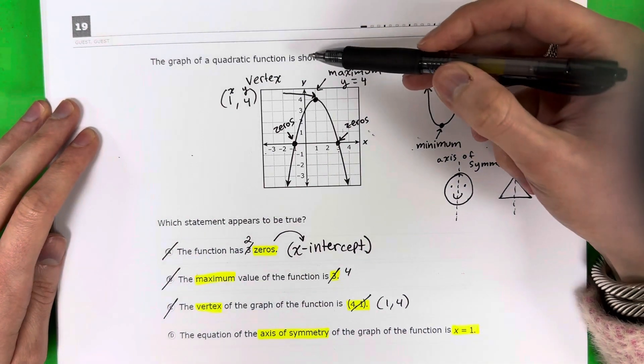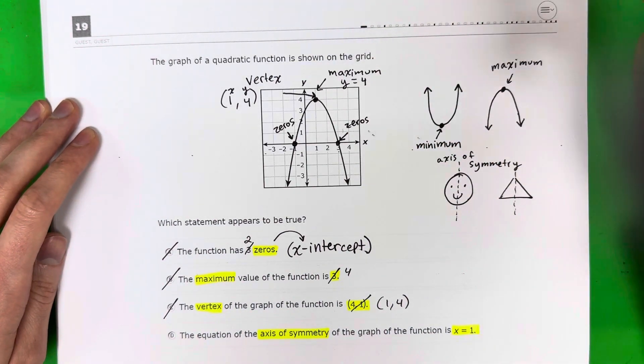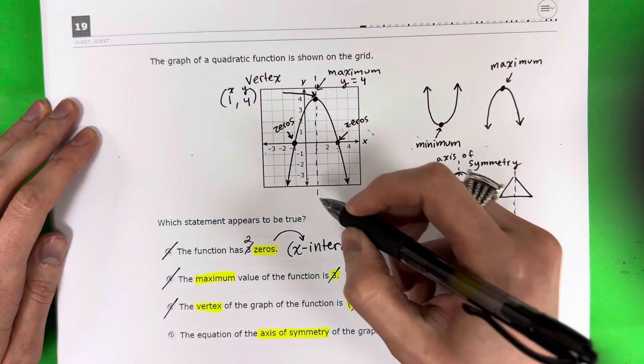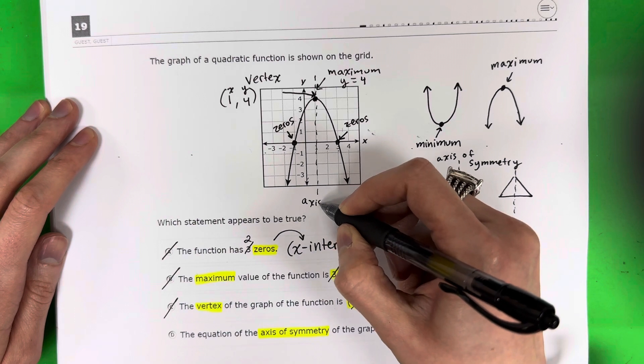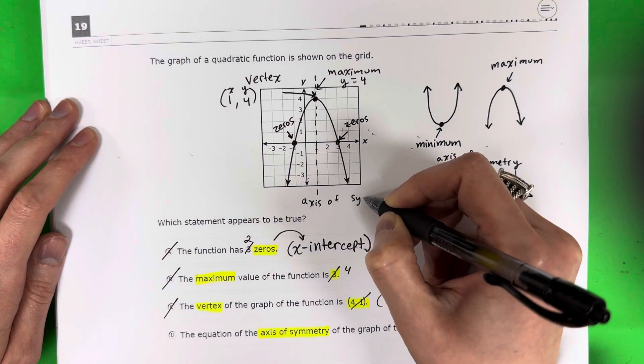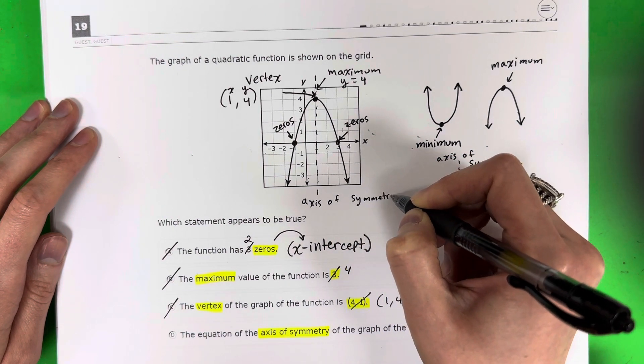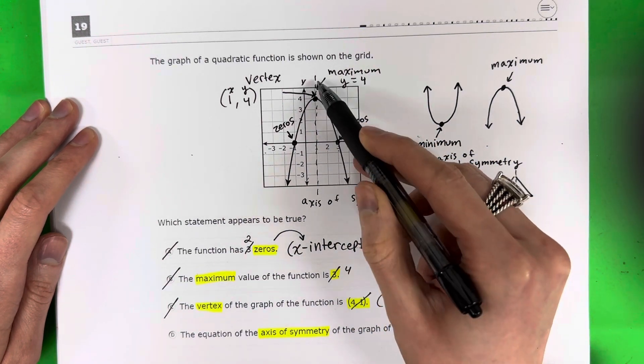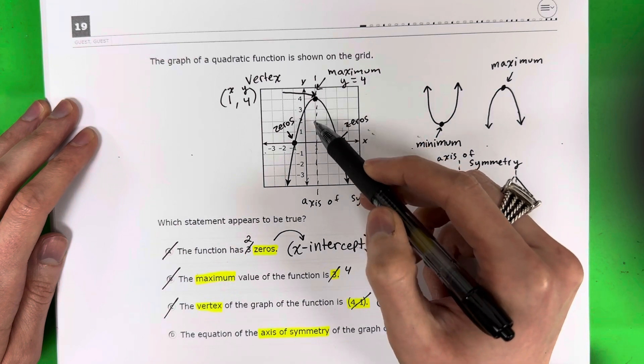So where would I put my line to cut this in half where it would be the same on both sides? It would be right here in the vertex, right? This is the axis of symmetry. And this line, this axis of symmetry, it's touching one number. What number is it touching?